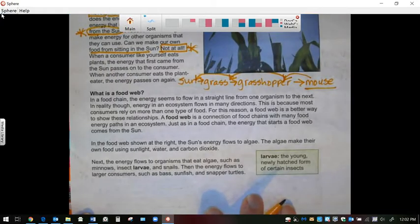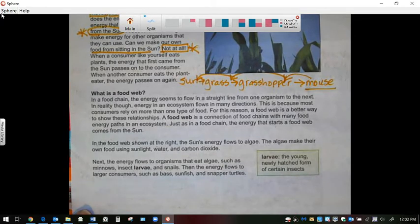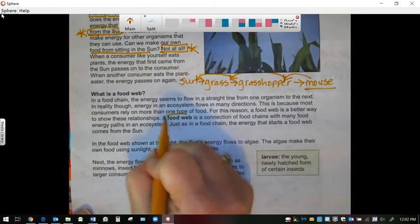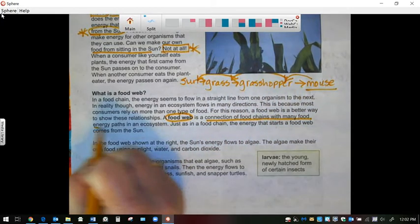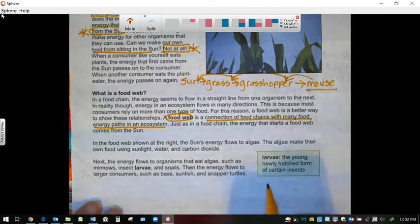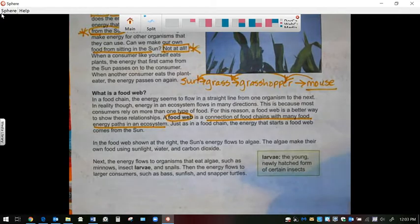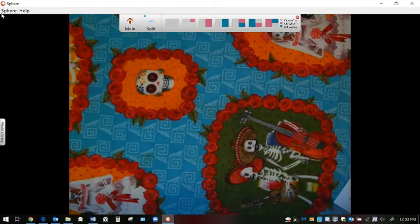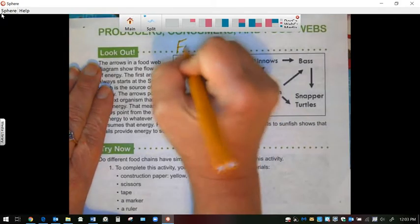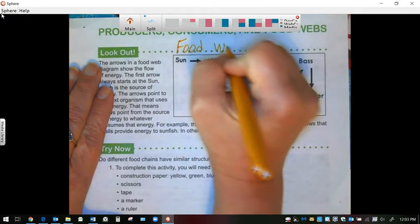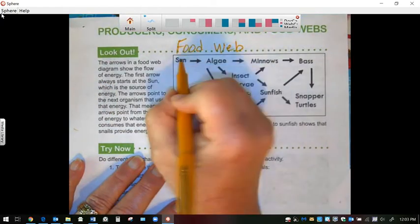All right, a food web. So in a food chain, there's a flow, a straight line from one organism to the next. But we're going to talk about a food web, because it's a connection of food chains with many food energy paths in the ecosystem. So let's look at the next page and we're going to look at this food web.